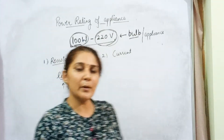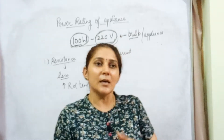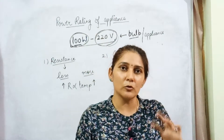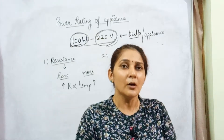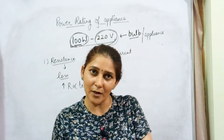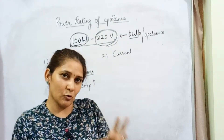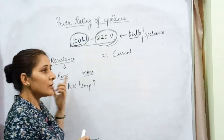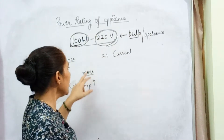If the temperature of the filament of the bulb increases, resistance also increases. This can be asked in your paper: if an appliance is not glowing or not working, what will be its resistance — is it different from when it is working? Yes, it is different. When the bulb is not glowing, the resistance is less. When it starts working, the resistance will be more.